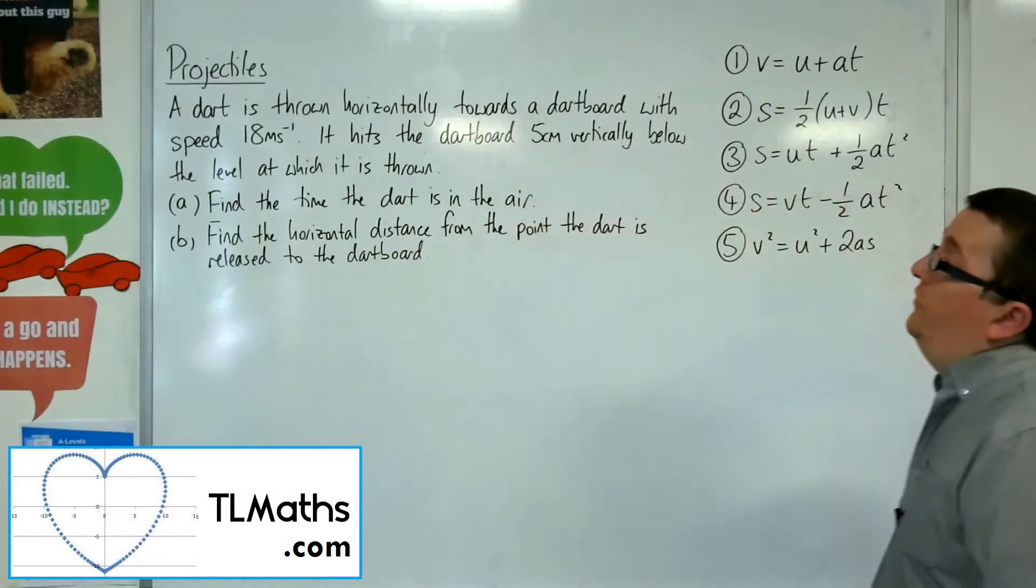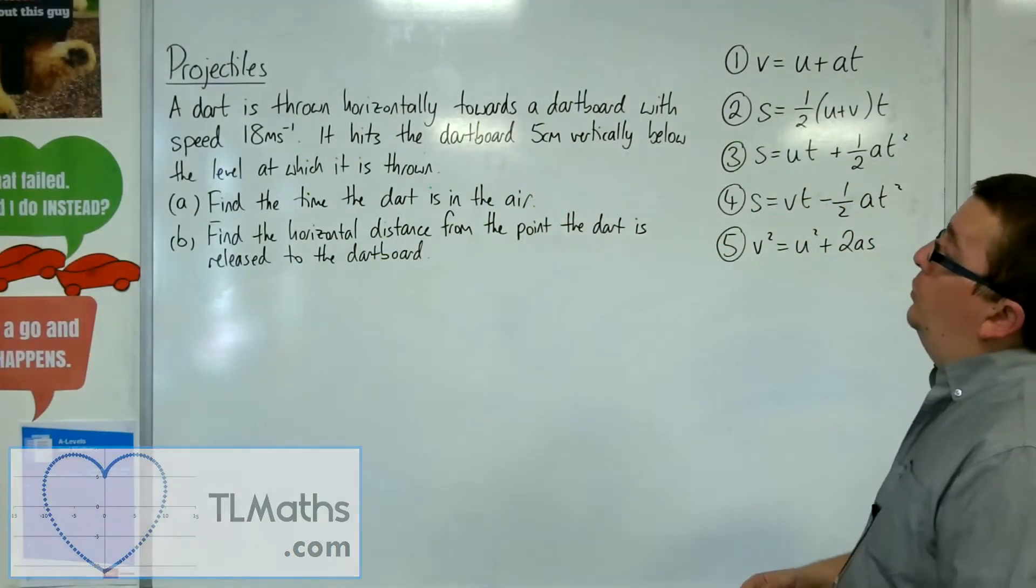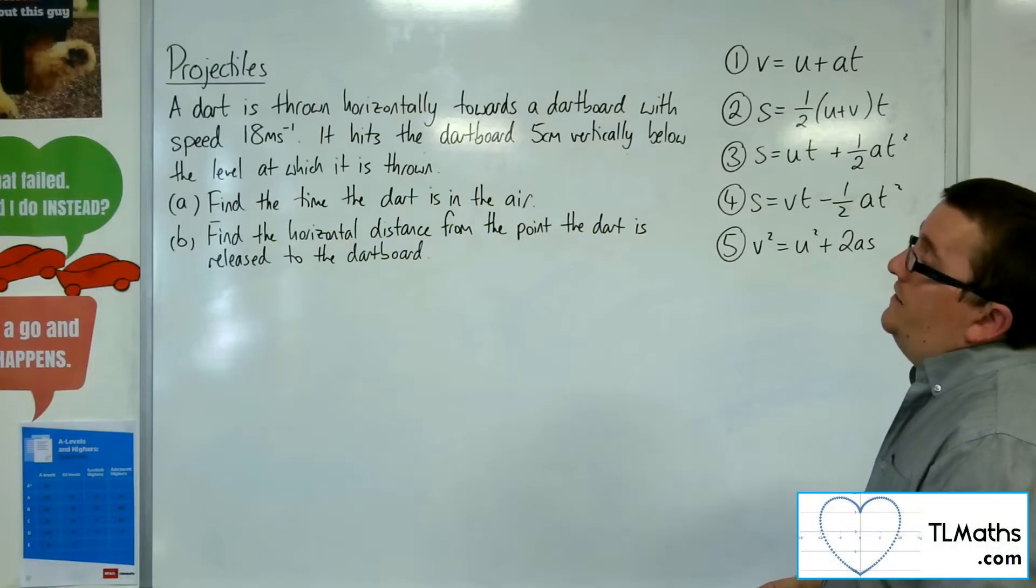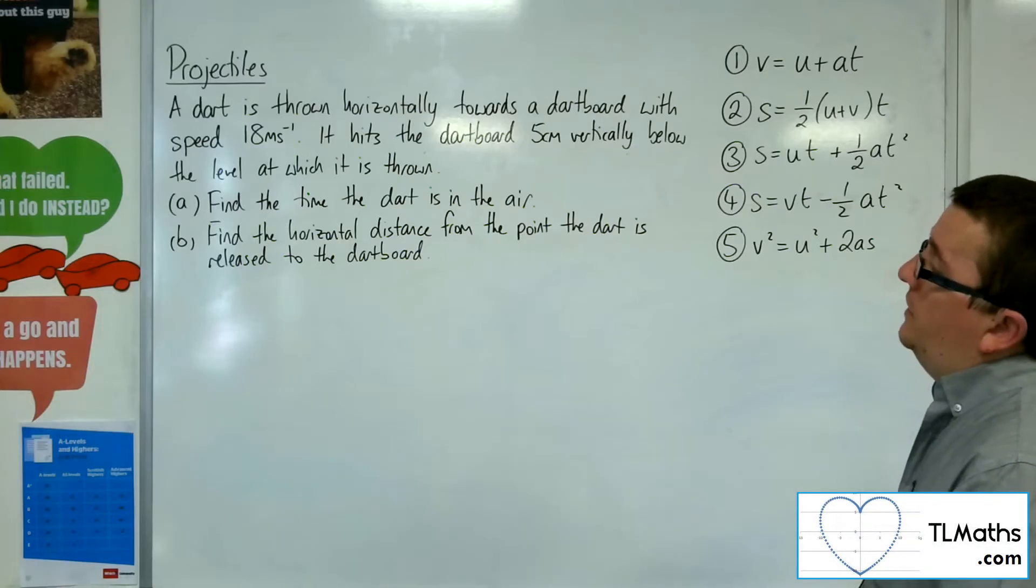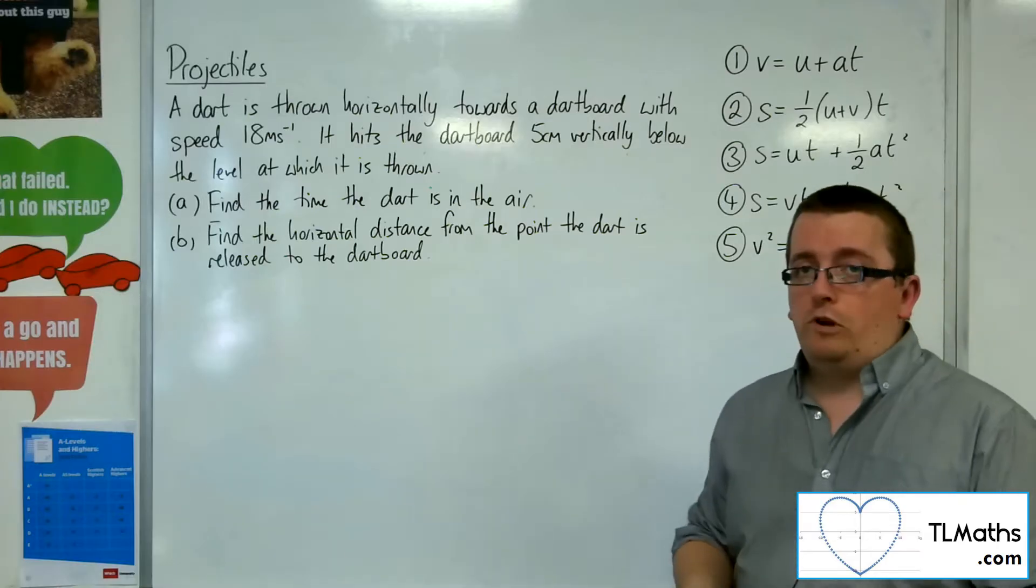Okay, in this video we've got a dart that's thrown horizontally towards a dartboard with speed 18 metres per second. It hits the dartboard 5 centimetres vertically below the level at which it is thrown.